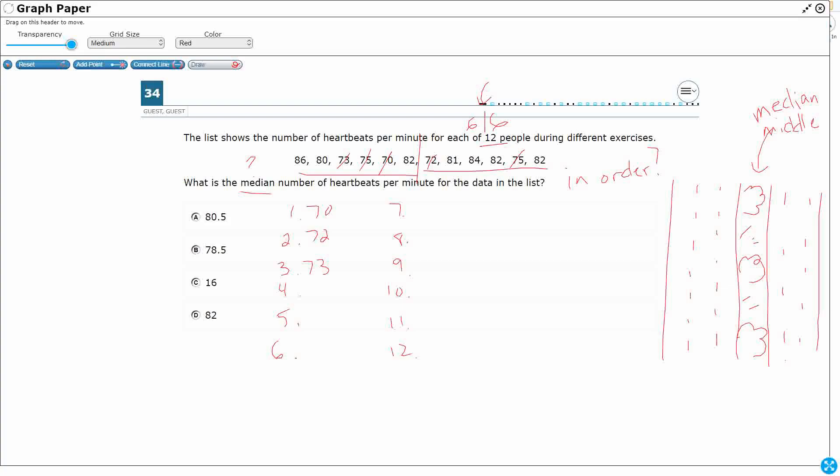And it looks like I'm done with all of my 70s. Now I need to look at 80s, looking for my smallest 80s. So I've got an 80, and then I've got an 81. And I've got three 82s: 82, 82, 82, and then an 84 and an 86.